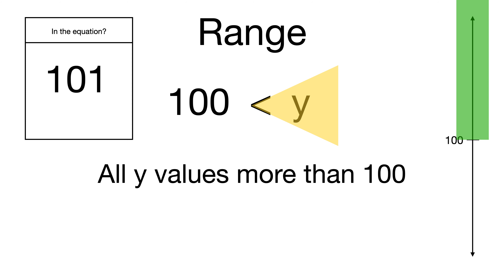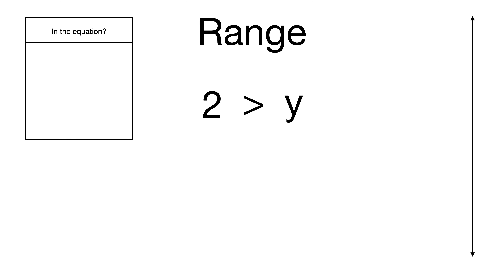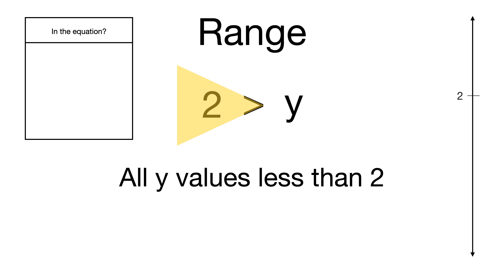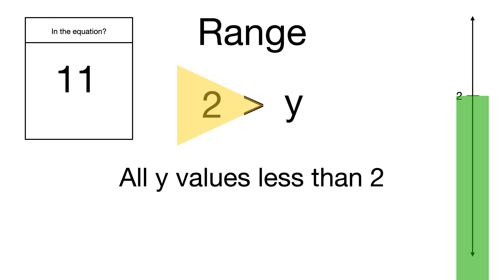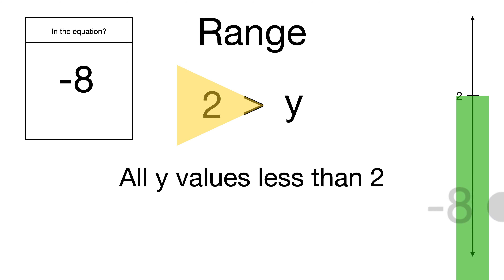The number 101 is just right above 100 and is more than 100, so yes it's in the range. Now let's try one more example where y is less than 2 — the inequality opens up towards 2, so the range is all y values less than 2, all the way to negative infinity. The number 11 is above 2, so it's not included. Negative 8 is below 2, so yes it's included in the range.